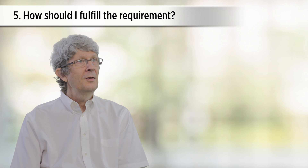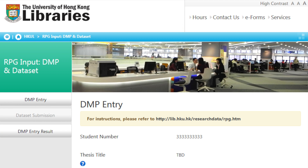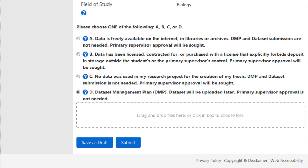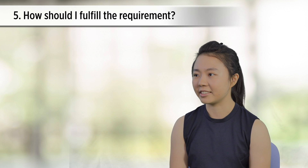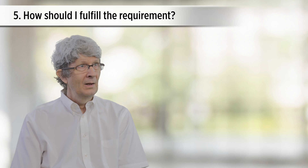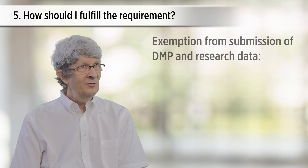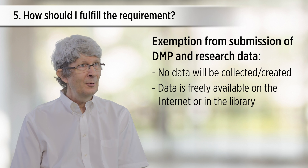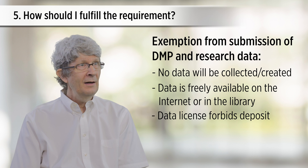You mentioned the online form several times. What is it, and how should I fulfil the requirement? The library has created an online form for research postgraduate students to make a decision on data management plans. Students will also use this form to submit their data management plan and their research data. But what about students working on purely theoretical research? Although we have been discussing data management plans and research data, there are some situations where they are not necessary. These include cases where no data will be collected or created, or alternatively that the data is freely available on the internet or in the library. This exemption also applies to students using someone else's data or purchased data where the license forbids deposit.